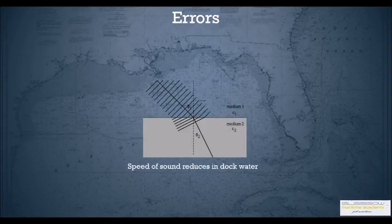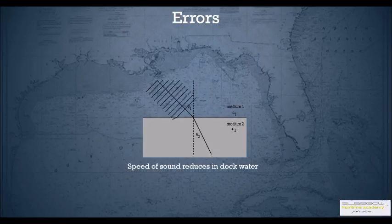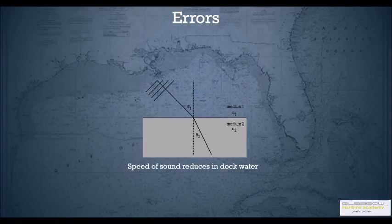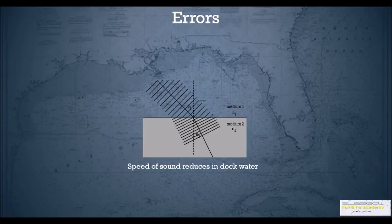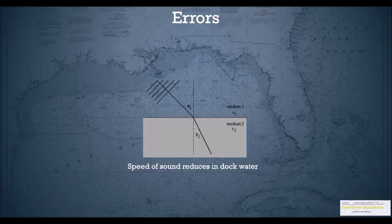You also need to know the errors of echo sounder. Speed of sound changes when areas have various densities. Speed of sound reduces in dock water, so less the density slower the speed of sound. What happens is in dock waters you tend to show more depth than actually it is and it's quite dangerous. So just be careful that in dock water the echo sounder might be showing you extra depth which doesn't exist.